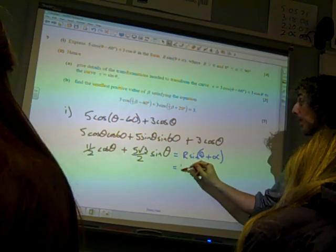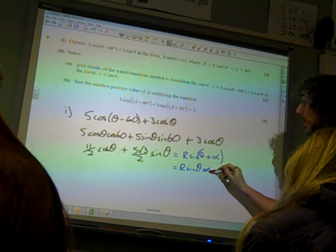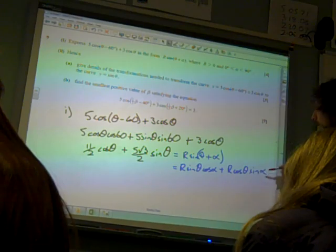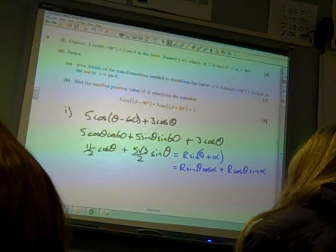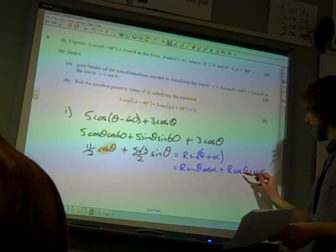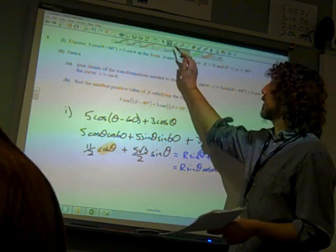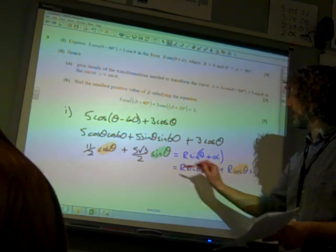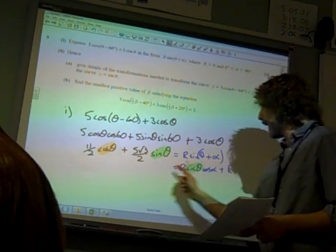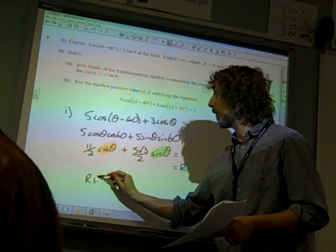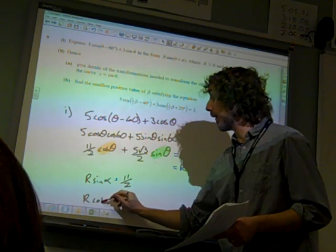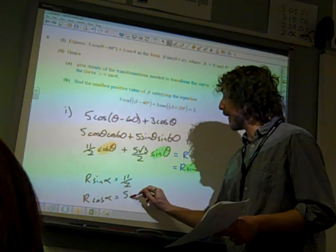And R sin(θ + α) is R sin θ cos α plus R cos θ sin α. So remember, we now match up the bits on this. We've got cos θ there and cos θ is over there. We've got them the wrong way round, haven't we? So if we compare the cos θ's, we have that R sin α is 11/2 and R cos α is 5√3/2.